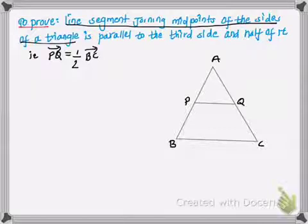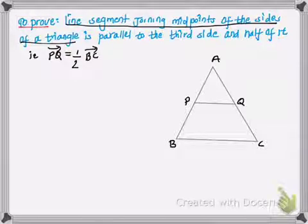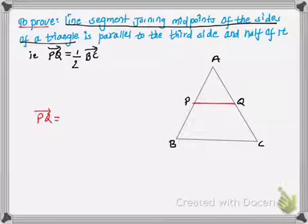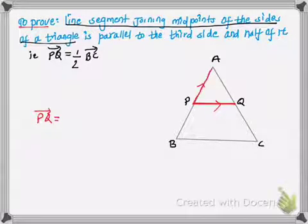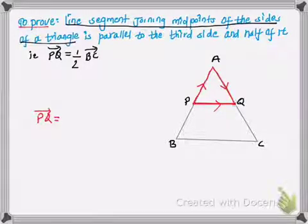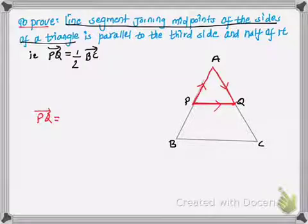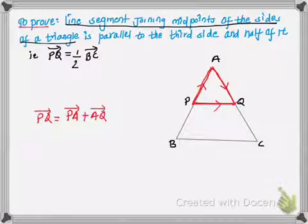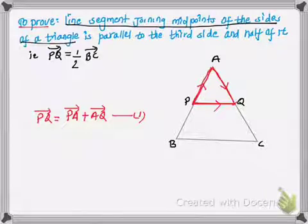We'll be applying the triangle law of vector addition to prove this. First, I'll take vector PQ. Moving from point P to Q is the same as moving from point P to A and then from point A to Q, finally reaching Q from P. This is the triangle law of vector addition, so vector PQ equals vector PA plus vector AQ. Let this be our first equation.